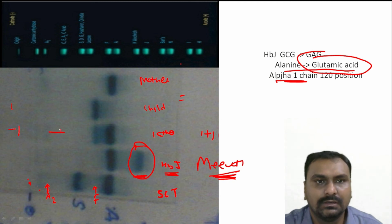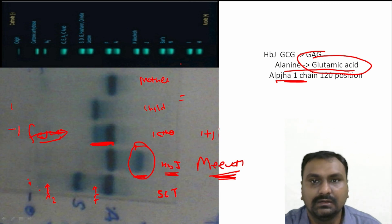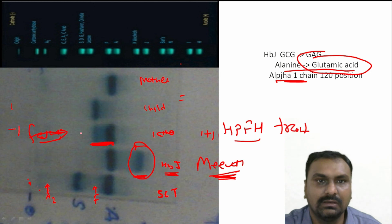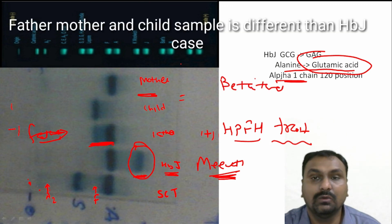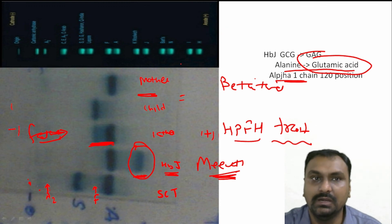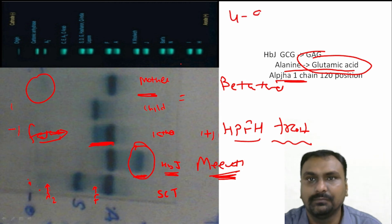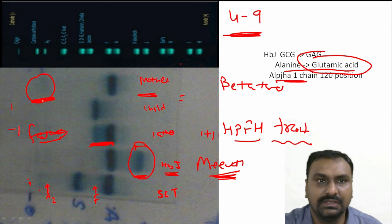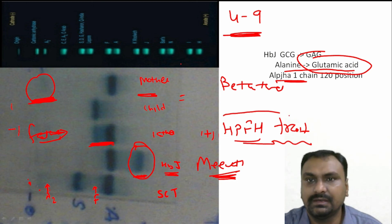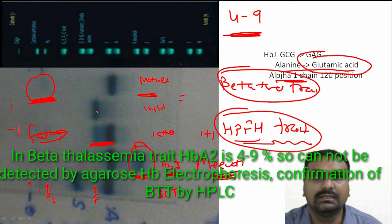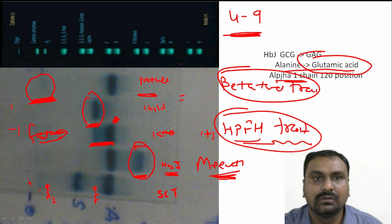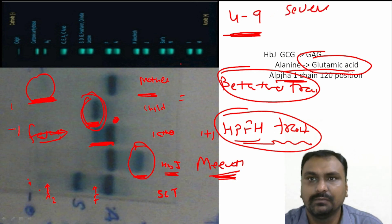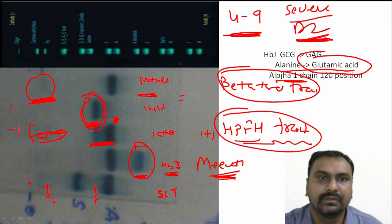If you see this pattern: the father has a band at A as well as F — that is hereditary persistence of fetal hemoglobin (HPFH) trait, it is a light band. The mother was beta thalassemia trait, which cannot be identified in agarose gel electrophoresis alkaline medium because HbA2 will be around 4–9% and we cannot appreciate it properly. The father has the HPFH trait and the mother has beta thalassemia trait. The child shows only a band at the F region — only fetal band — so the patient had severe disease with manifestations just like beta thalassemia major.